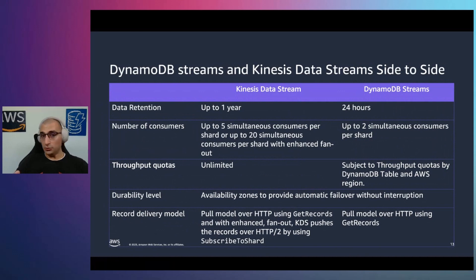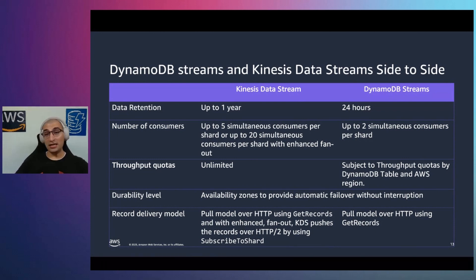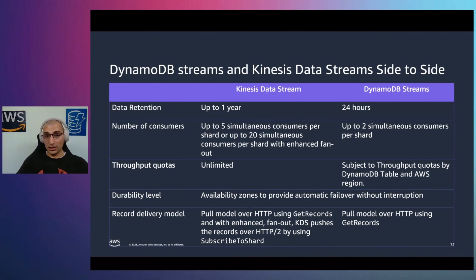The best way to decide which option is right for you is to compare them side by side. If the ordering of records is very important for your application, it might be better to go with DynamoDB Streams. But if you require a data retention period on the order of months, it might be better to use Kinesis Data Streams, because Kinesis Data Streams can retain data up to one year. DynamoDB Streams can only retain data for 24 hours — if you forget to query the stream within that window, you will lose that information. Regarding the number of consumers, Kinesis Data Streams supports five consumers while DynamoDB Streams supports two consumers per stream.